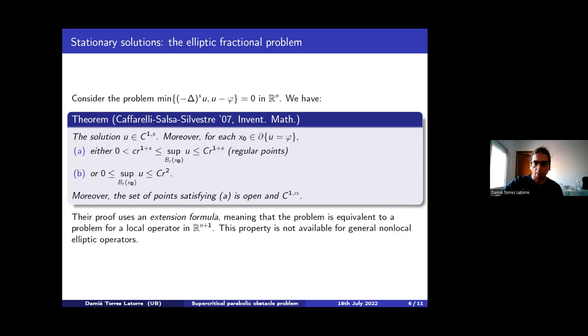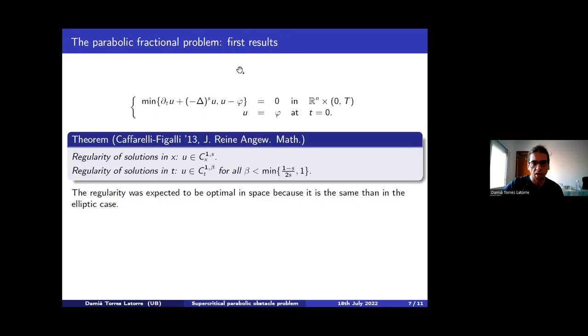Now, about the parabolic fractional problem, first results were in 2013 by Caffarelli and Figalli. That recovered the same regularity of solutions in X as in the elliptic case, which makes you expect that it's optimal. And then in time, they get this other regularity, which is C^{1,β}. And β depends on S in some way that makes sense for the scaling of the equation. So you have to notice here that I have a time derivative in U and I have an operator that is like 2S derivatives in space to U.